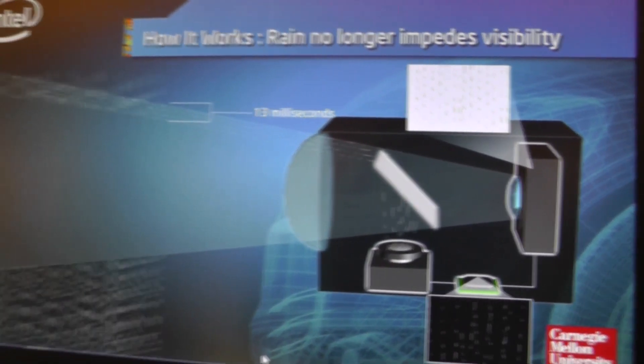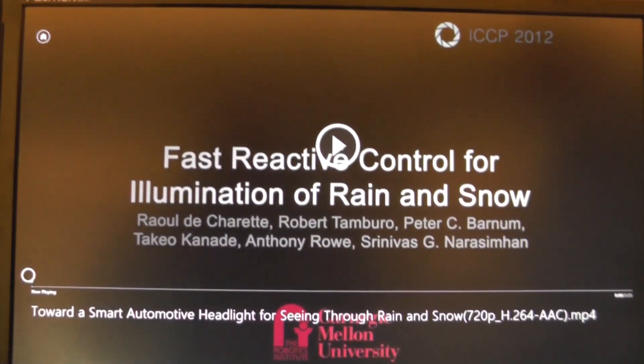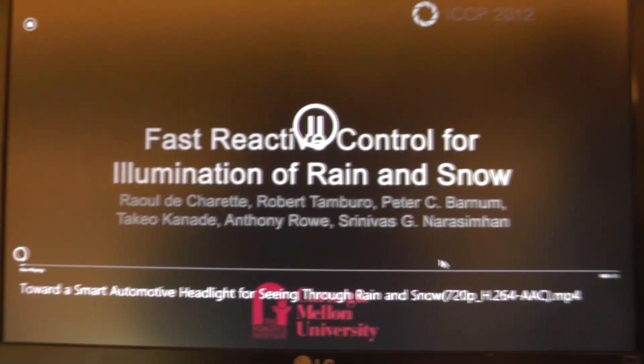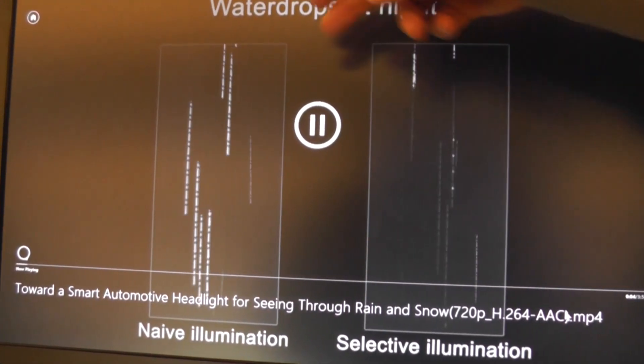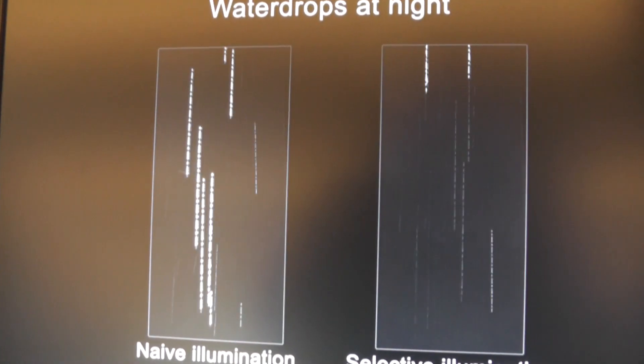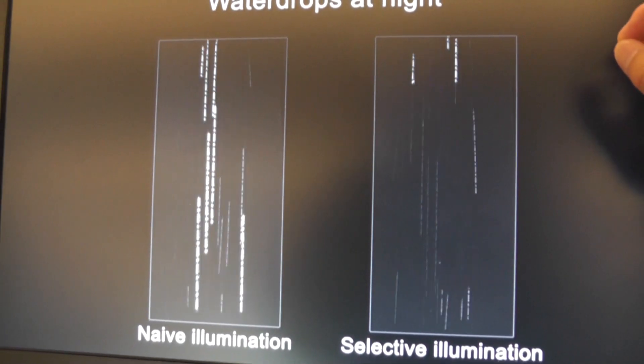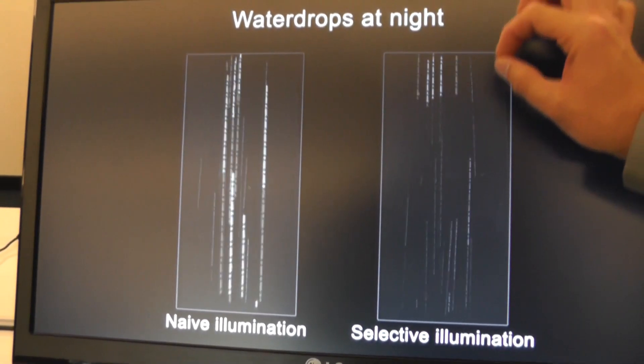I'll show you a video that represents the technology. As the rain falls you can see this is what you normally see today when your headlight is on. You see these long streaks and it's very distracting. When we turn the system on you can see that those streaks are less visible in the video on the right.